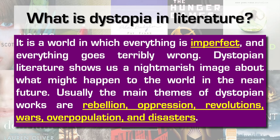Dystopia is a world in which everything is imperfect and everything goes terribly wrong. Dystopian literature shows us a nightmarish image about what might happen to the world in the near future. Usually, the main themes of dystopian works are rebellion, oppression, revolutions, wars, overpopulation and disasters.